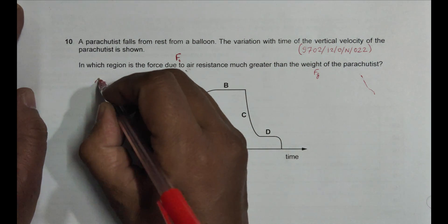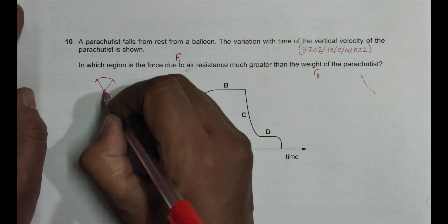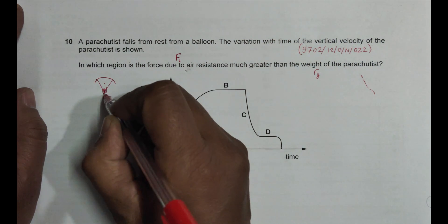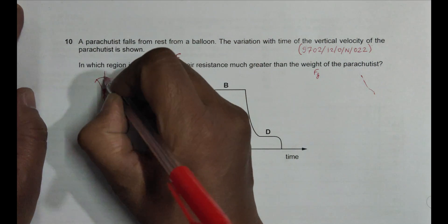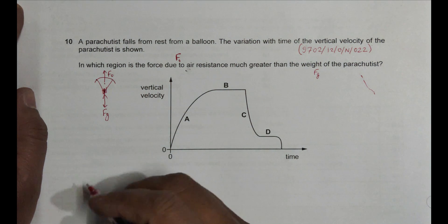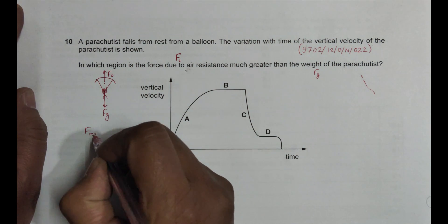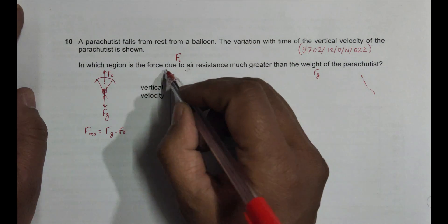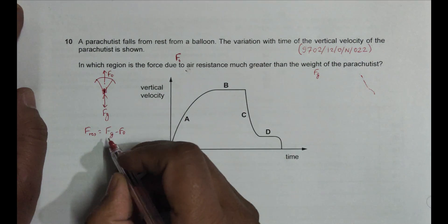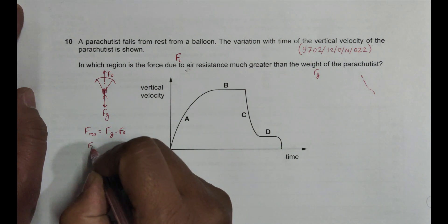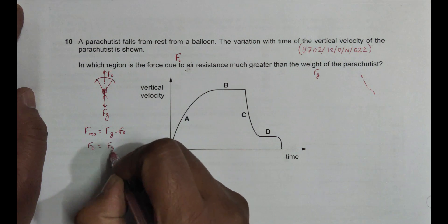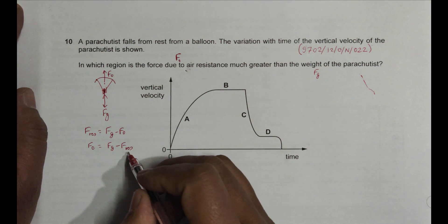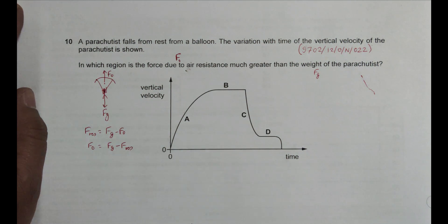If I draw the parachute with the person below, the weight of the person is Fg acting downward, and the opposing air resistance force is fo acting upward. The resultant force is equal to Fg minus fo, where fo is the opposing force due to air. So fo equals Fg minus F resultant.